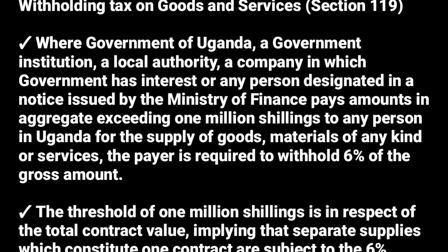Let's look at withholding tax on goods and services, or withholding tax on supplies. Where the Government of Uganda, a government institution, a local authority, a company in which the government has an interest, or any person designated by the Ministry of Finance pays an amount in aggregate exceeding 1 million shillings to any person in Uganda for supply of goods, materials, or any other kind of materials, the payer is required to withhold 6% of the gross amount. So in case you are paid by the government or anyone related to the government, before you receive that money, they are supposed to first deduct 6% as withholding tax.